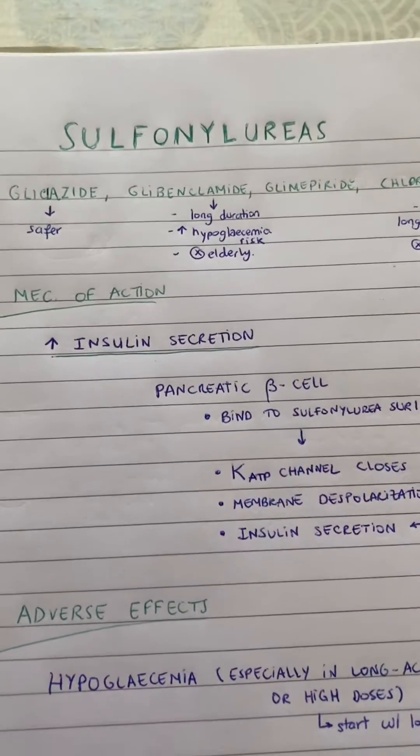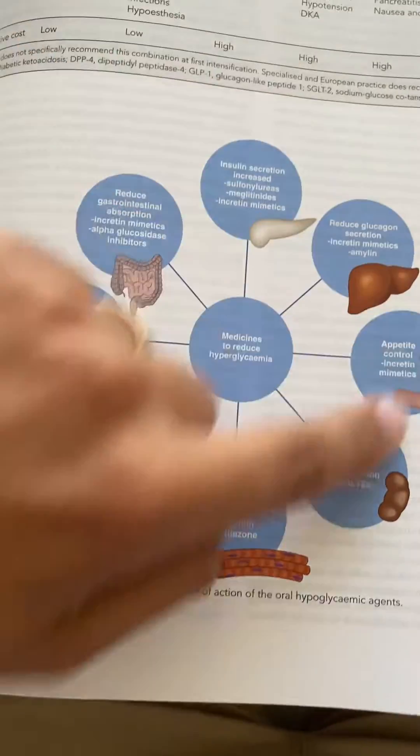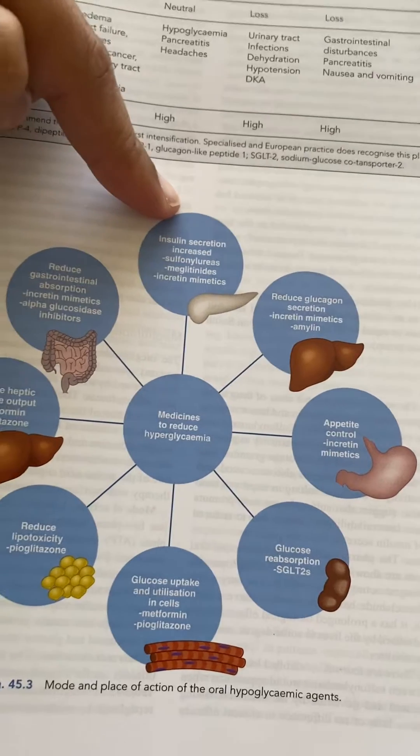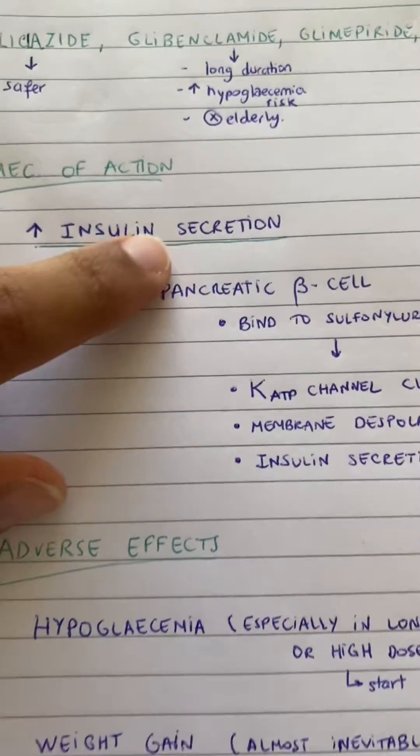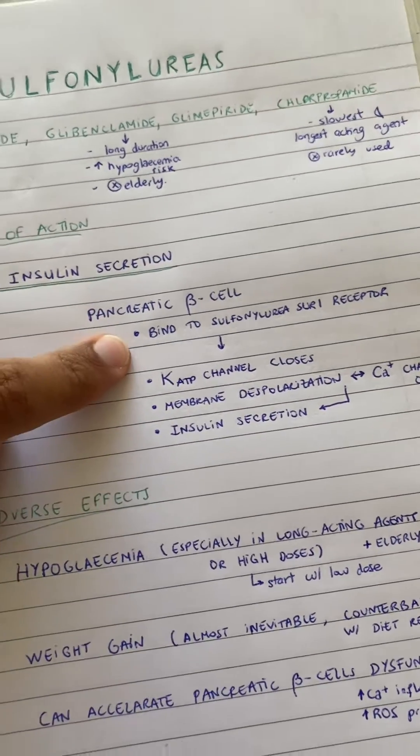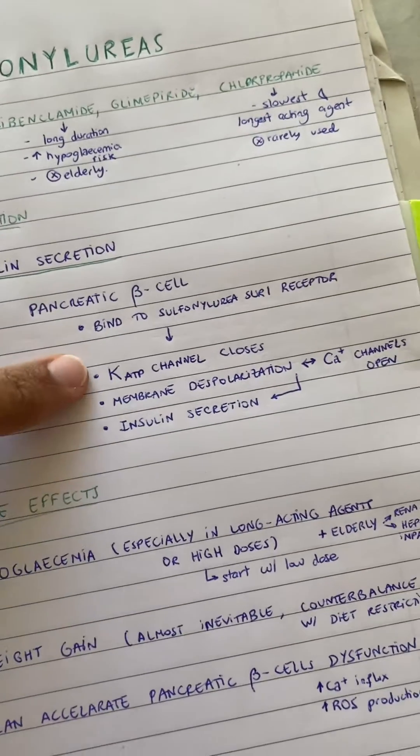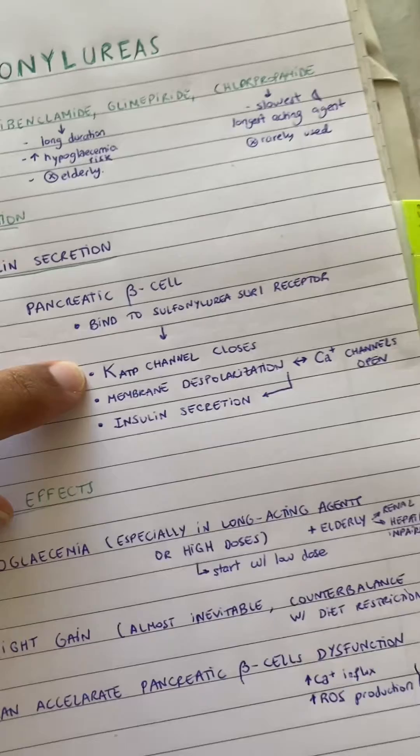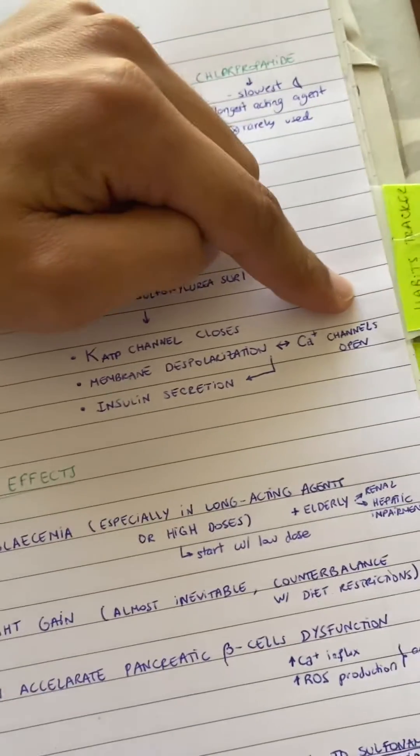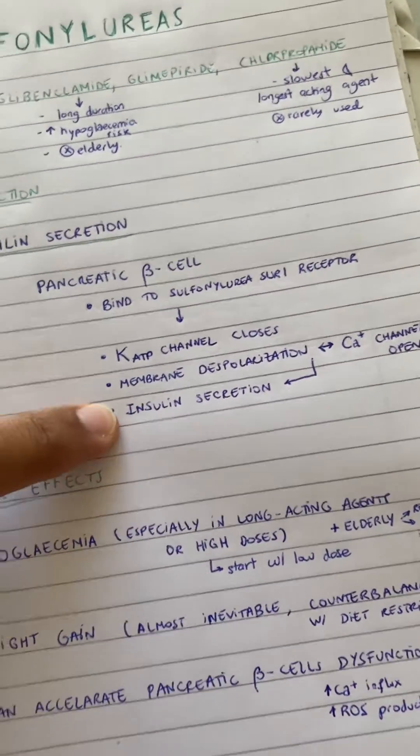So talking about sulfonylureas, they are anti-diabetic drugs. They can act in different ways, and sulfonylureas act by increasing insulin secretion. How do they do this? They act directly in the pancreatic beta cells, bind to sulfonylurea receptors (SUR1), which will close the potassium channels, which will lead to membrane depolarization and calcium influx because the calcium channels open, which will lead ultimately to insulin secretion.